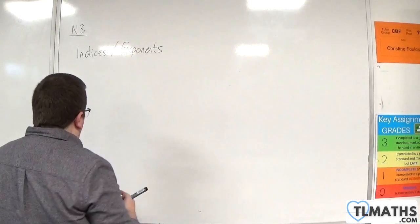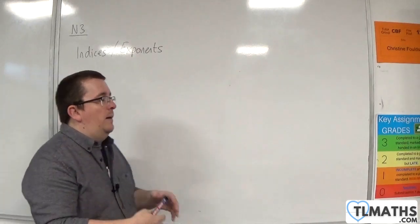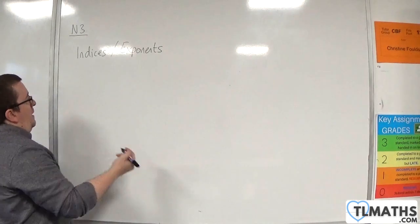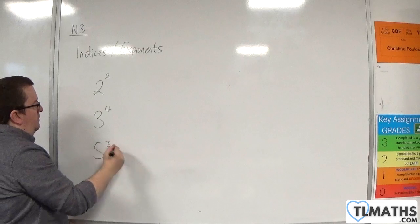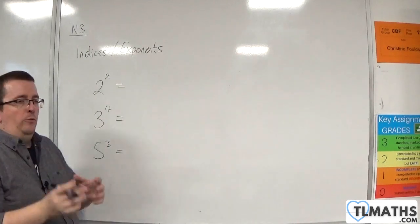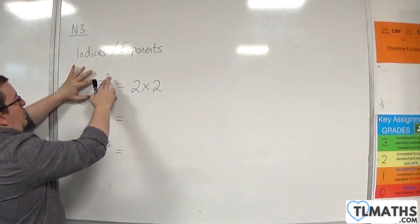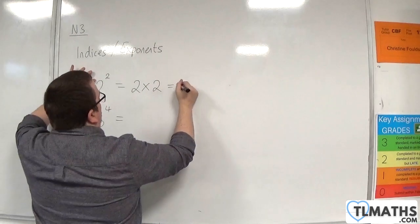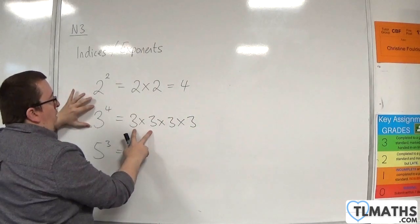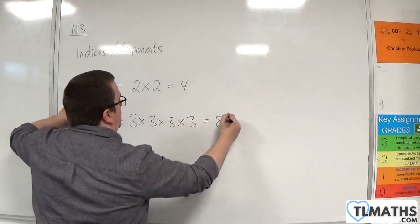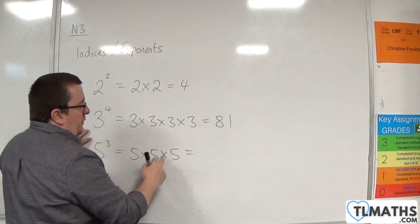Let's first talk about powers — and we'll cover more of this later in this playlist, so you'll see some of it twice. For powers, you need to recognise things like 2 squared, 3 to the power of 4, or 5 cubed. 2 squared means 2 times 2, which is 4. 3 to the 4 would be 3 × 3 × 3 × 3: 3 times 3 is 9, times 3 is 27, times 3 is 81. 5 cubed is 5 × 5 × 5: 5 times 5 is 25, times 5 is 125.